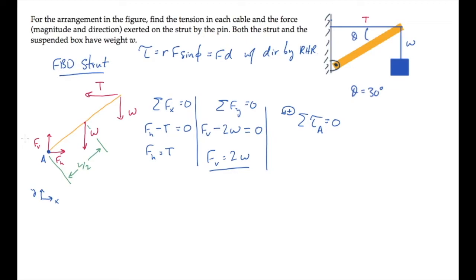First, let's notice that the two pin forces, Fh and Fv, exert no torque about the lower left end, about point A, because they both act through that point. They have no moment arms.